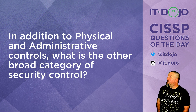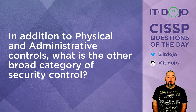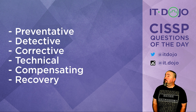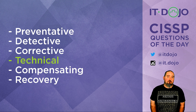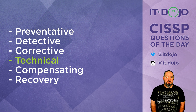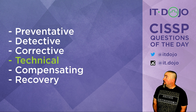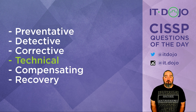Question number two: in addition to physical controls and administrative controls, which of these is the other broad category of security controls? The answer is technical controls. Administrative controls, physical controls, technical controls — combine those three things together in a way that is appropriate and meaningful for your organization, and hopefully you eventually get to an adequate level of security. What does adequate mean? That's for you to decide.